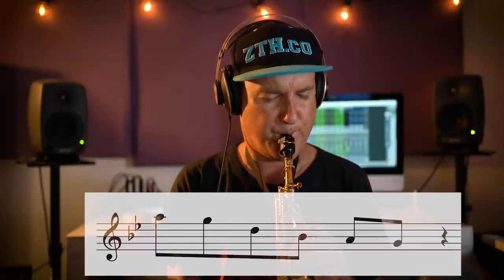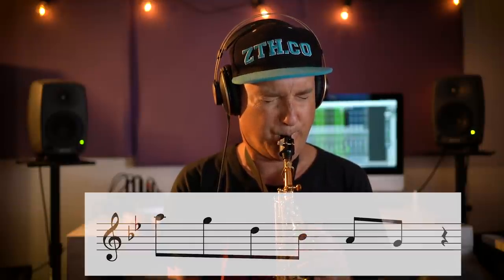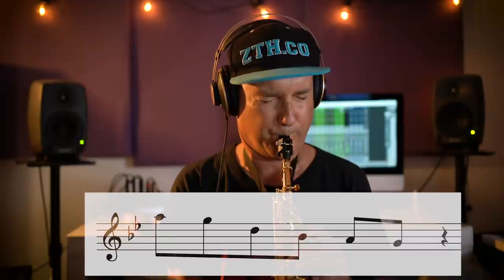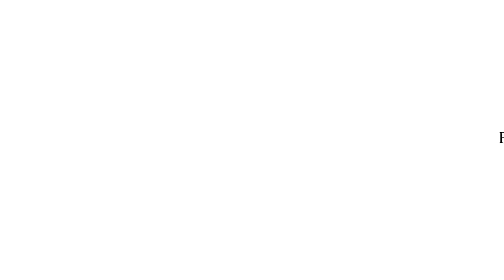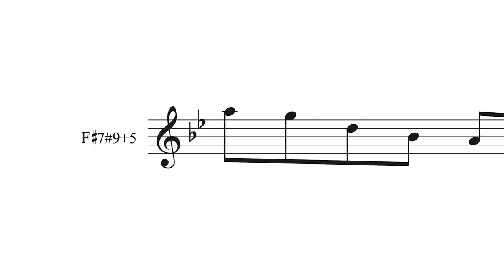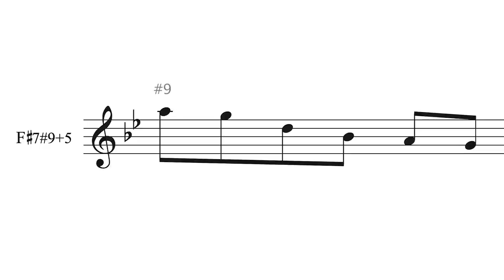For instance, it sounds amazing over an F sharp 7. Now the notes relating to the F sharp 7 are the sharp 9, the flat 9, augmented 5th, major 3rd, sharp 9th, and flattened 9th. The line starts on the sharpened 9th of the dominant chord, as A is the sharpened 9th of F sharp 7.